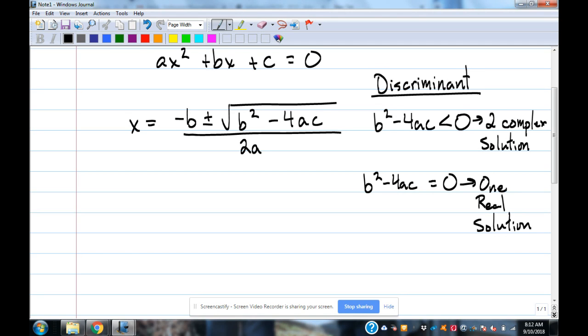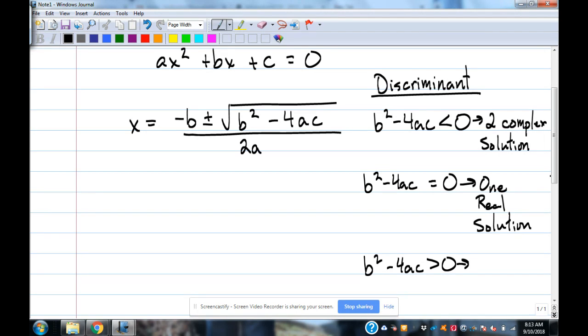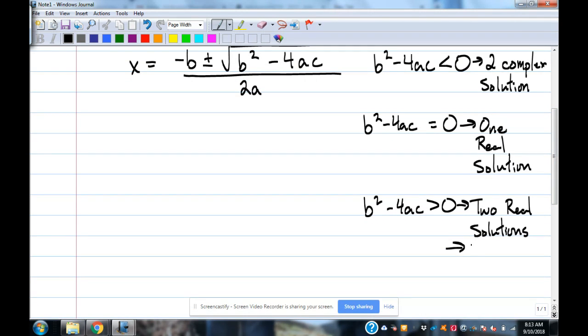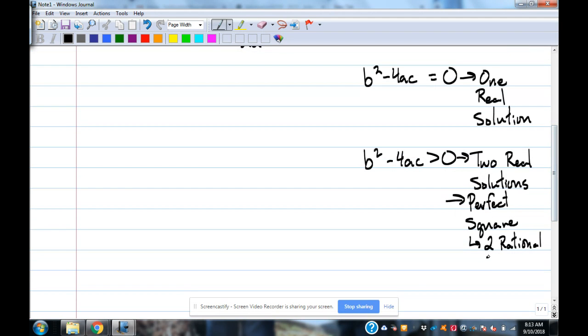The last situation is if the b squared minus 4ac is greater than zero, which is what kind of number? Positive. If it's a positive number, that means we're going to have two real solutions. That positive one can also help us know if it's a rational solution. If it's a perfect square, that means that it's going to be two rational solutions.